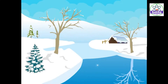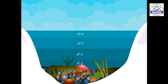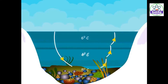The anomalous expansion of water plays an important role in the survival of aquatic animals and plants in cold countries. During winter seasons, the temperature of water decreases. Water at the surface of lakes, rivers, seas, etc. starts contracting — its volume decreases and density increases.